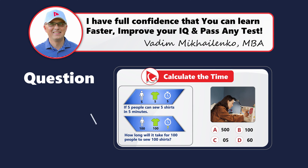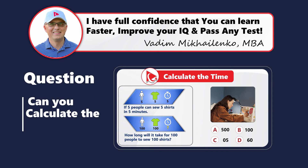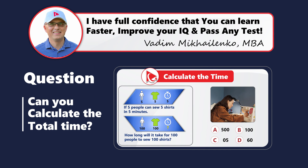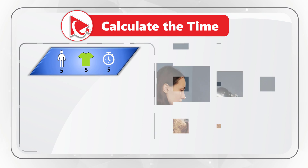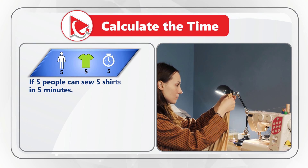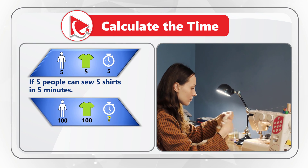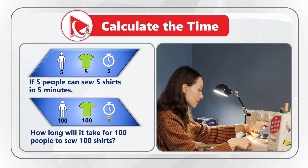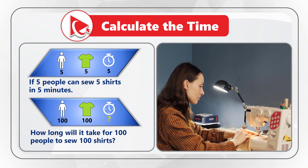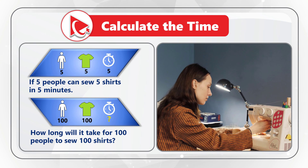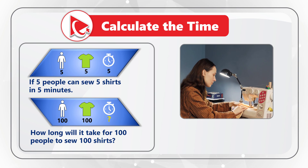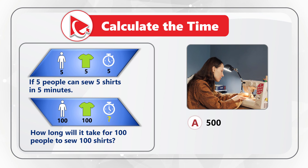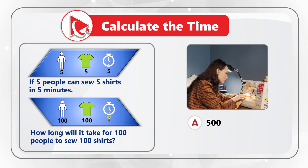Here's a very interesting question which might make you think, but hopefully you will get it very quickly. If five people can sew five shirts in five minutes, how long will it take for 100 people to sew 100 shirts? You are presented with four different choices: choice A 500 minutes, choice B 100 minutes, choice C five minutes, and choice D 60 minutes.